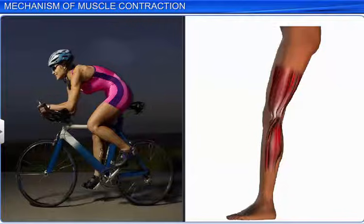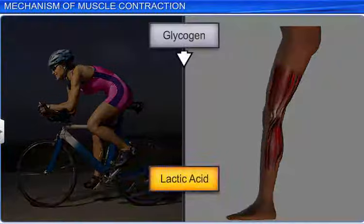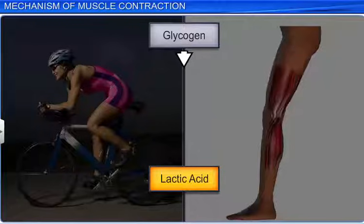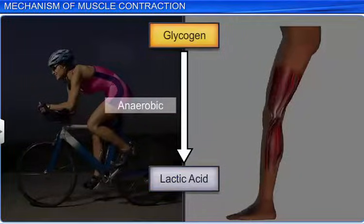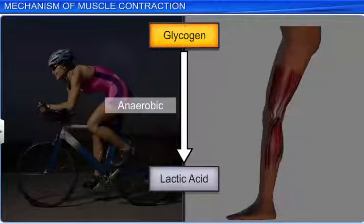The repeated activation of muscles may lead to the accumulation of lactic acid due to the anaerobic breakdown of glycogen, causing muscle fatigue.